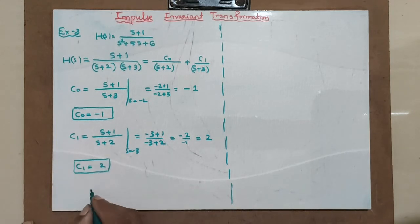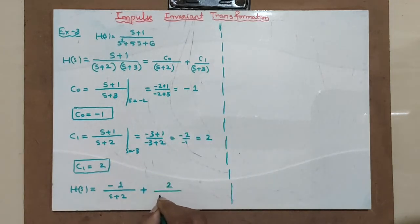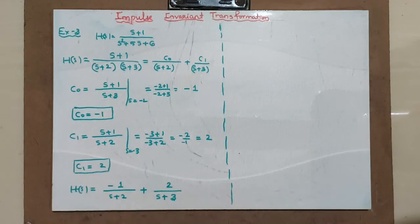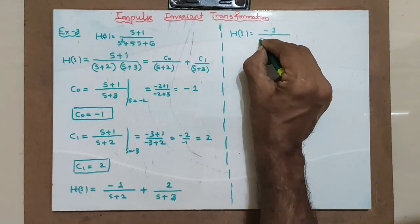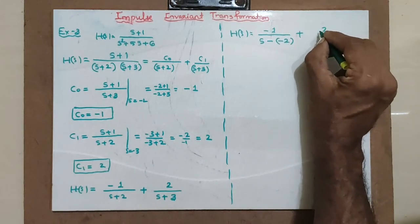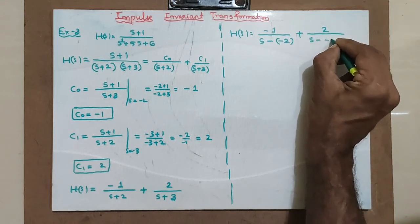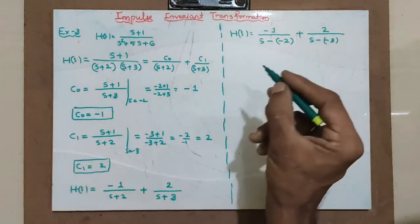Hence H(s) with partial fraction expansion is written as minus 1 divided by (s plus 2) plus 2 divided by (s plus 3). Writing this in standard (s minus s₀) form: H(s) equals minus 1 divided by (s minus minus 2) plus 2 divided by (s minus minus 3). This standard form makes it easy to apply the impulse invariant transformation.